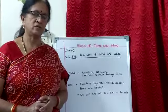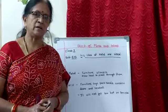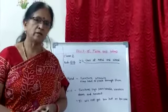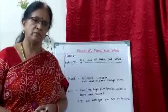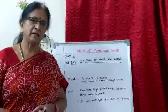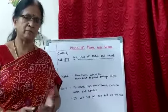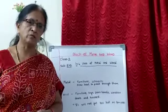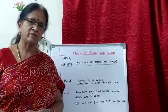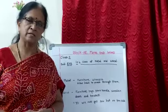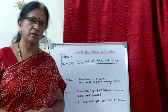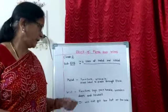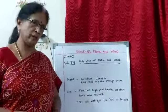Furniture means tables and chairs. Especially when we observe in the kitchen, cooking utensils are all made of metal. Why? Metal will absorb the heat very quickly, so we can cook food in metal utensils. For example, big utensils, cookers, and all that are made of metal — it will allow heat to pass through them.